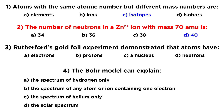For number three, Rutherford's gold foil experiment demonstrated that atoms have a nucleus. We had already demonstrated by J.J. Thompson's cathode ray experiment that electrons exist, and by extension it was extrapolated that there must also be protons somewhere in an atom, because we knew that atoms had a net neutral charge. We knew there were electrons and protons, but we didn't know how they were distributed — there was the plum pudding model, things like that. What Rutherford did was demonstrate that the atom was mostly empty space and that all of the positive charge was concentrated in a nucleus. So that is C, nucleus.